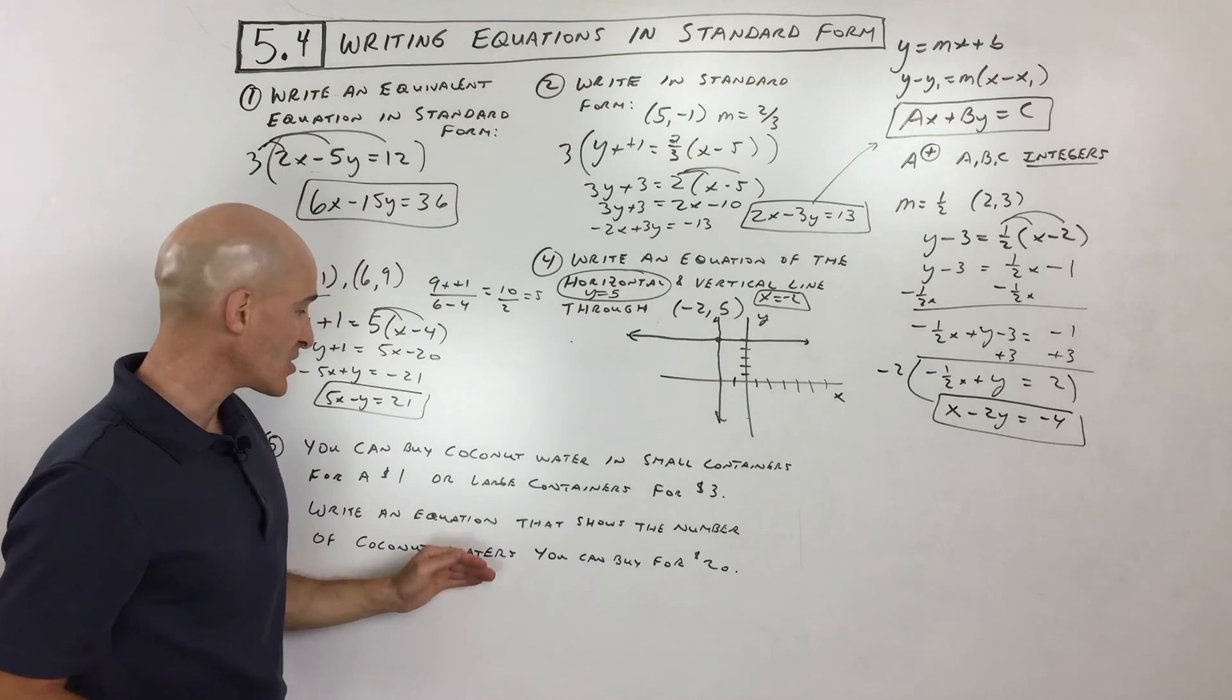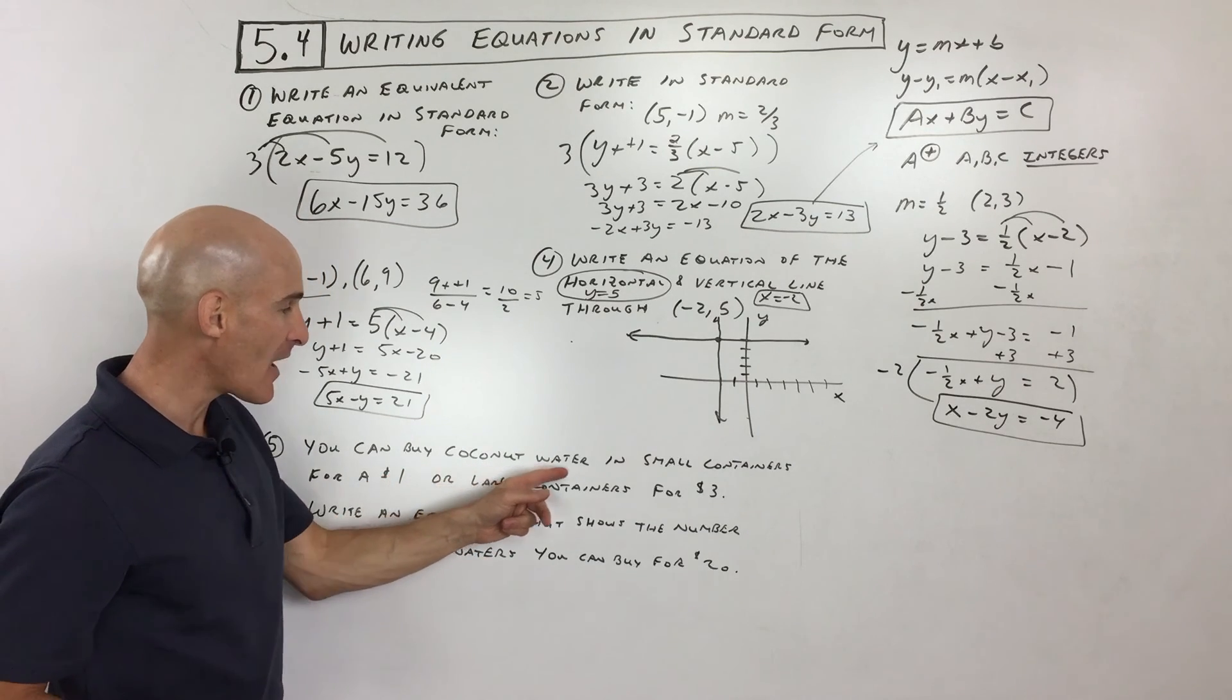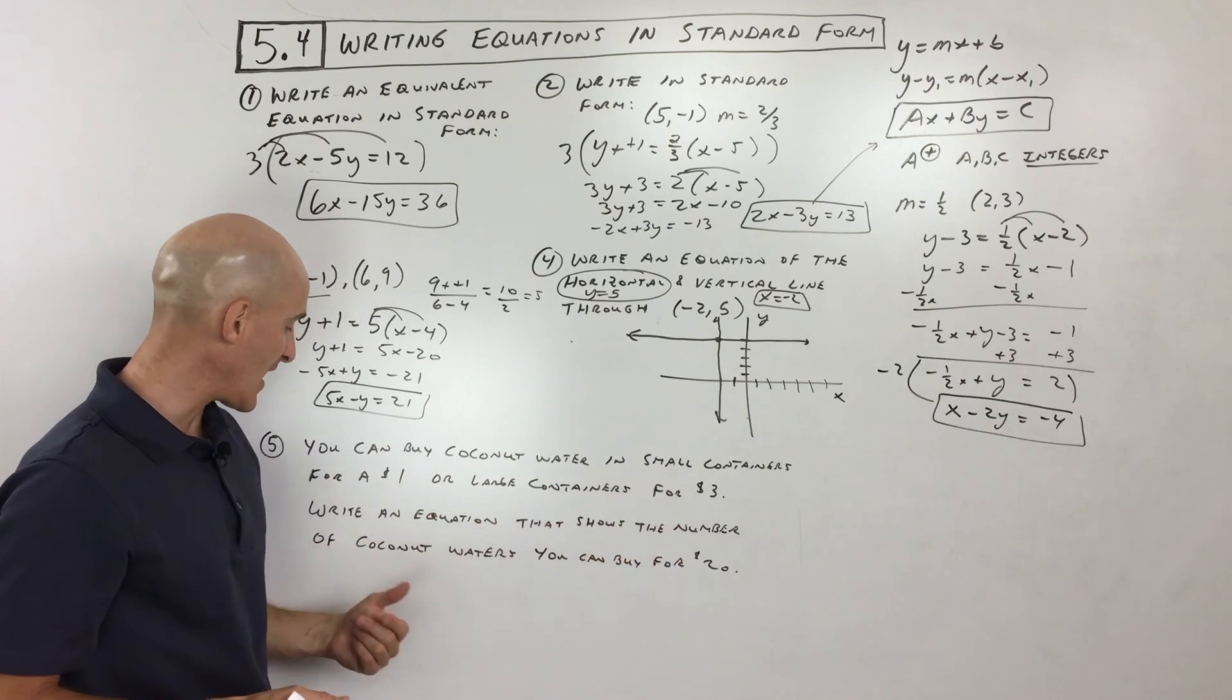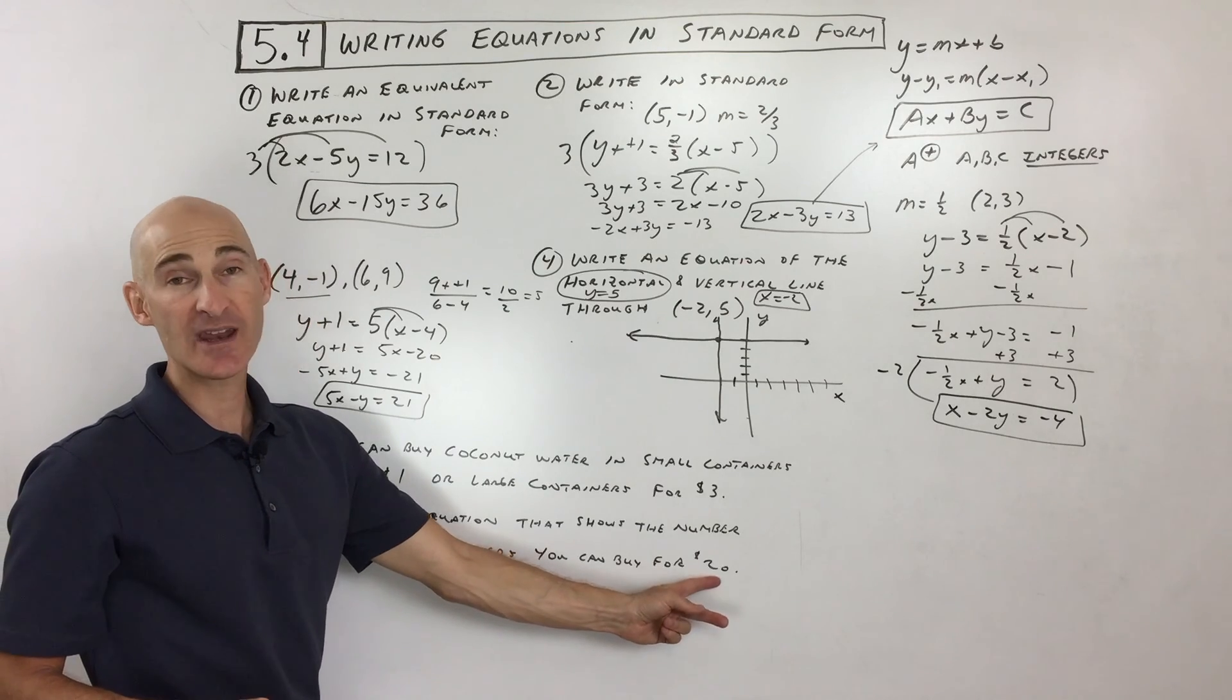So let's look at the last question, a word problem, of course, right? We need to practice our story problems. You can buy coconut water in small containers for a dollar, or large containers for $3. Write an equation that shows the number of coconut waters you can buy for $20.